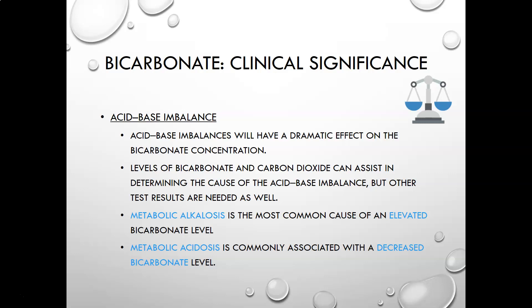In metabolic alkalosis, the most common cause is an elevated bicarbonate level — the pH will be high and the bicarbonate will be high. In metabolic acidosis, there is a decreased bicarbonate level — the pH is low and the bicarbonate is low. Both of these are metabolic imbalances, indicating the problem is in the bicarbonate and not in the CO2 or gases. If the problem is in the CO2 or gases, those would be respiratory imbalances — respiratory acidosis or respiratory alkalosis. More on that in the acid-base videos.